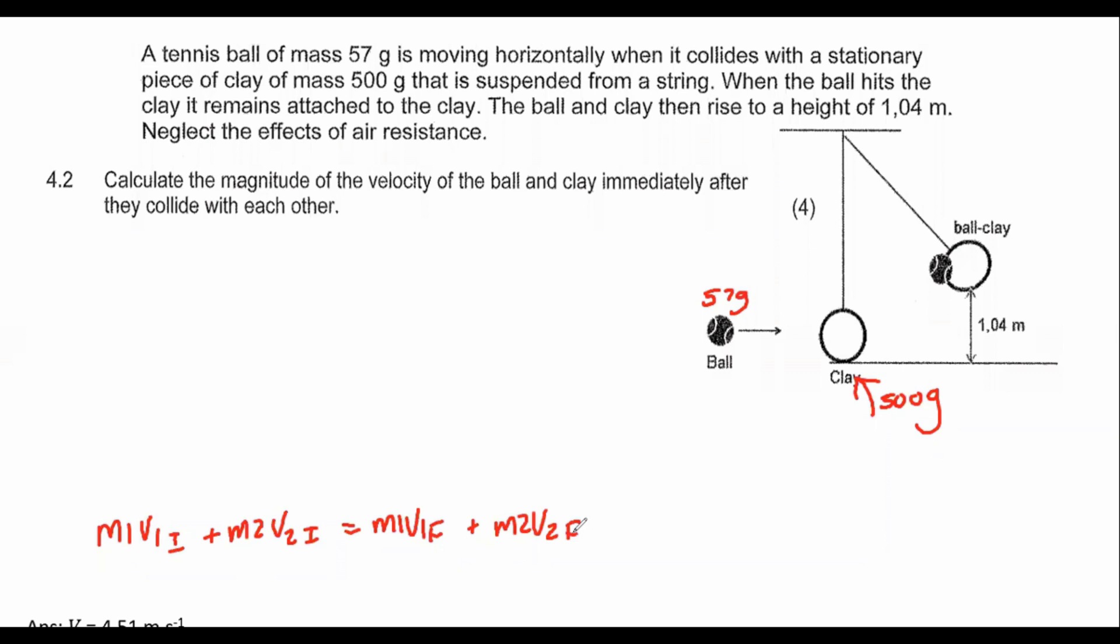However, if you're only looking at this part of the question, we don't really have enough information. We don't know the velocity of the ball initially. We do know that the clay's initial velocity is zero because the clay wasn't moving. And then we don't know what the velocity of the ball and clay will be together afterwards, although these two are the same.